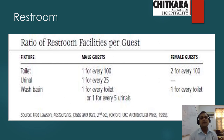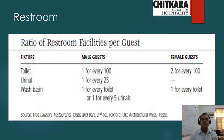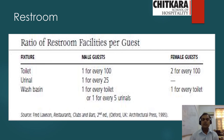Regarding restroom requirements: for male guests, 1 toilet is required for every 100 guests; for female guests, 2 toilets are required for every 100 guests. 1 urinal is required for every 25 male guests. 1 wash basin is required for every toilet or for every 5 urinals. For females, 1 wash basin is required for every toilet.